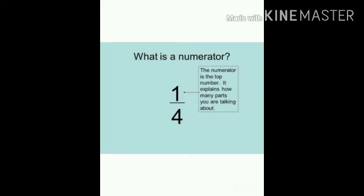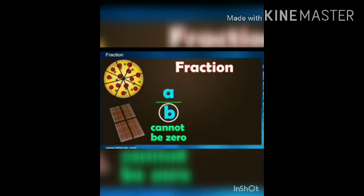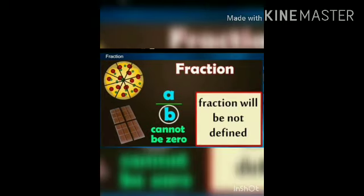What is denominator? Denominator is the total number of equal parts into which the whole is divided. Denominator cannot be zero, because when it is zero, the fraction will not be defined.